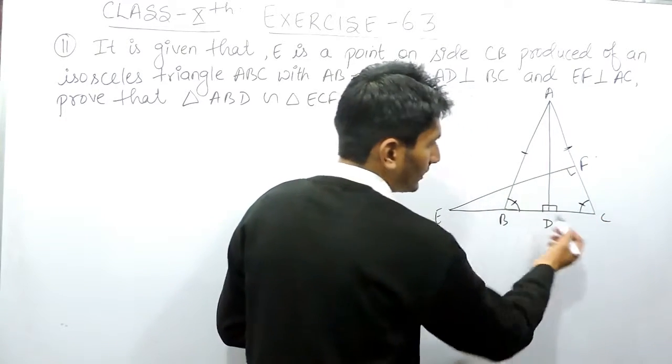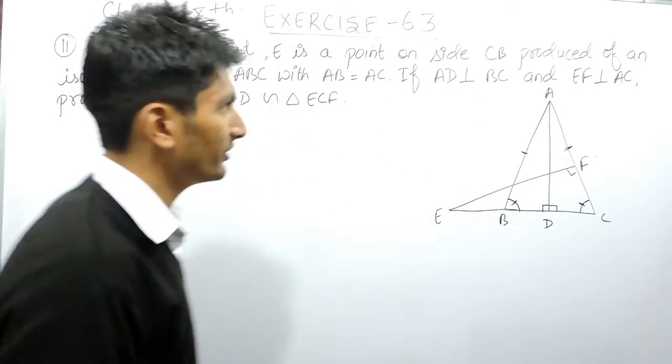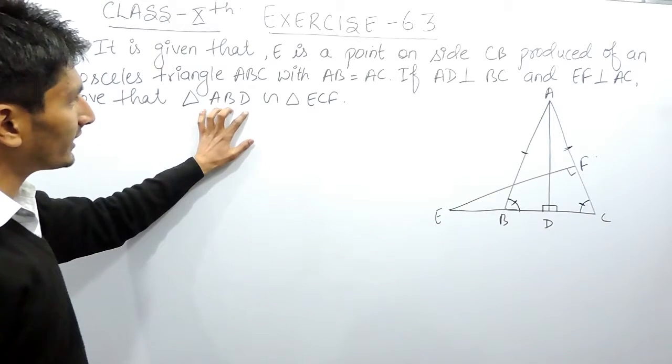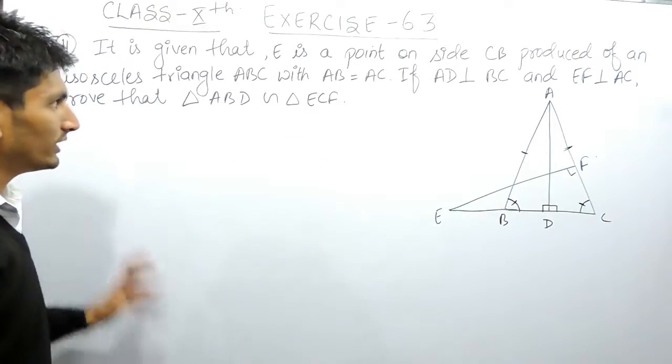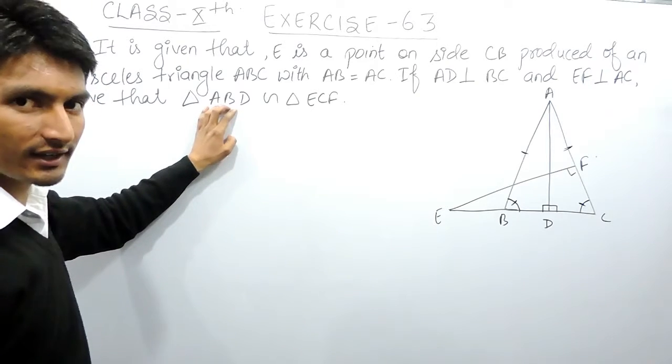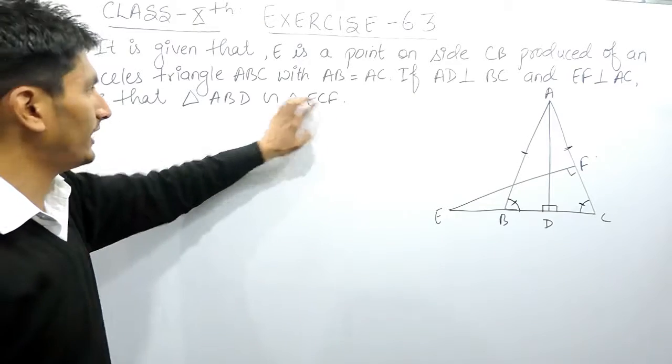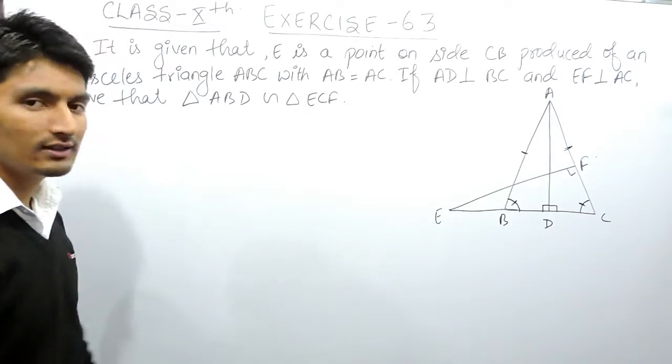So this is the first thing we must know. And if you want to prove that triangle ABD is similar to triangle CEF, the only thing you need to do is prove that two angles of this triangle are equal to two angles of this triangle, and if you are able to do that, these two triangles will be proven similar.